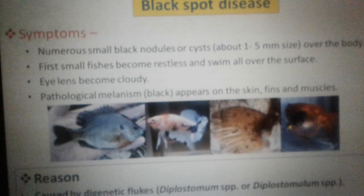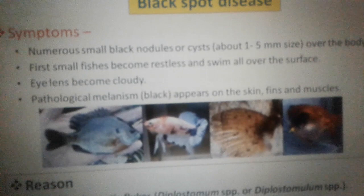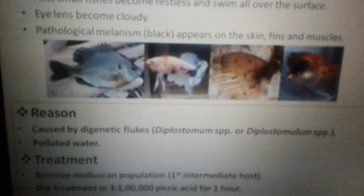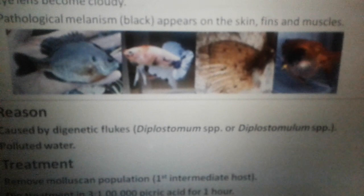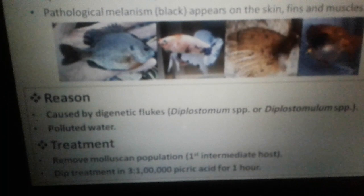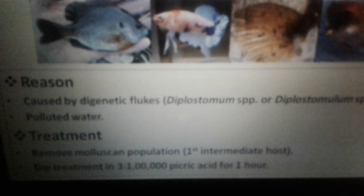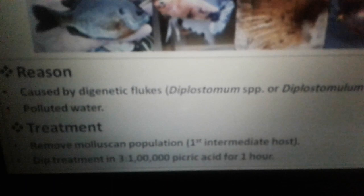Next is black spot disease. Black spots appear throughout the body — on the skin, muscles, and surface. The fins can also sometimes turn black. This is caused by digenetic flukes, mainly Diplostomum species, or due to polluted water. Treatment includes removing mollusc species or deep treatment through picric acid.